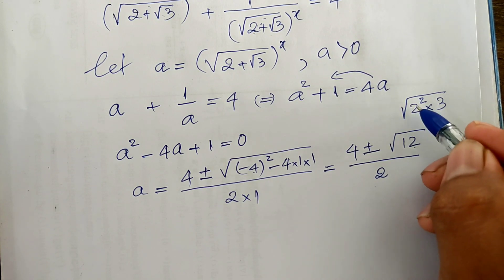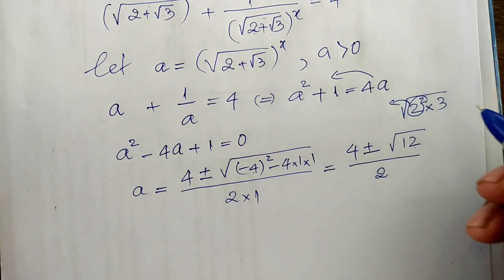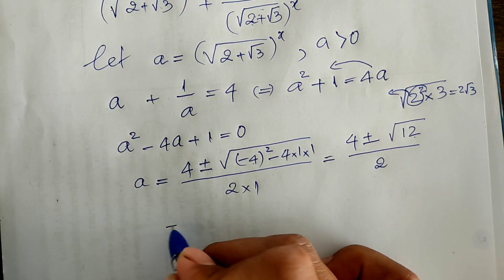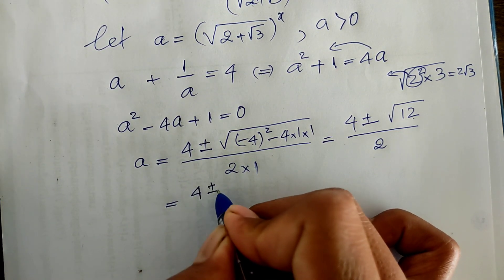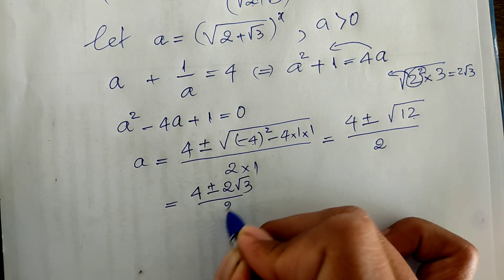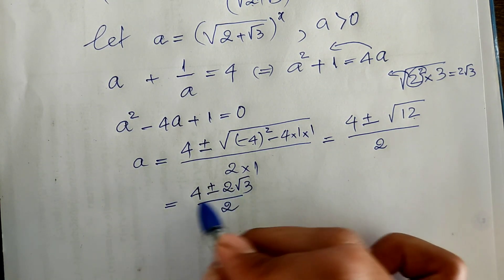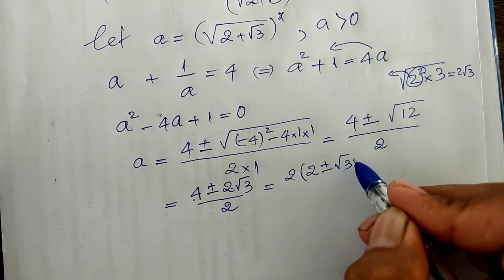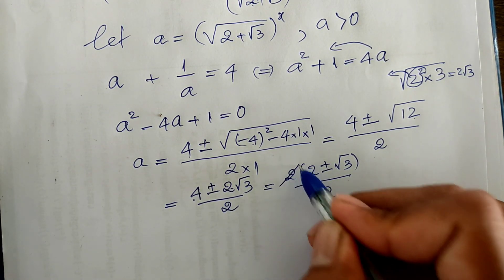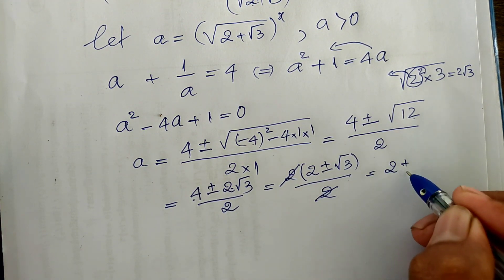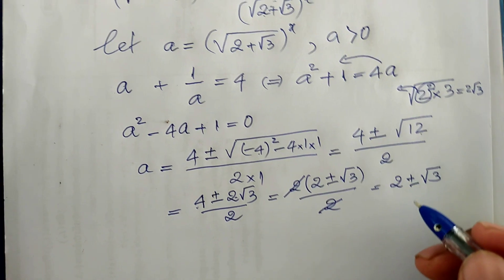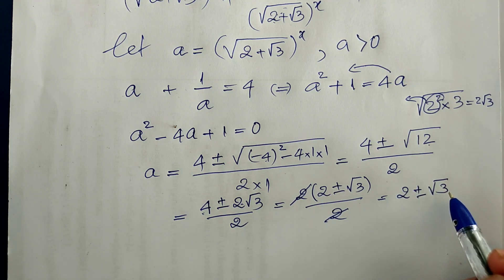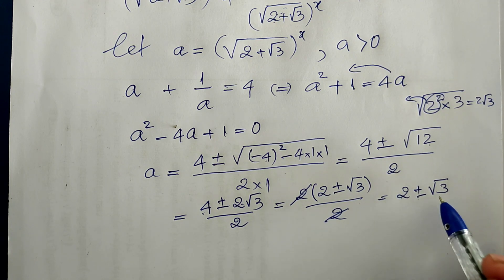Square root of 12 equals square root of 4 times 3, which equals 2 square root of 3. So we get 4 plus or minus 2 square root of 3, divided by 2. Taking 2 out as a factor, we get 2 times (2 plus or minus square root of 3), divided by 2. The 2's simplify, giving us 2 plus or minus square root of 3. Now, square root of 3 is approximately 1.7, so 2 minus square root of 3 is positive. Therefore A has two values.